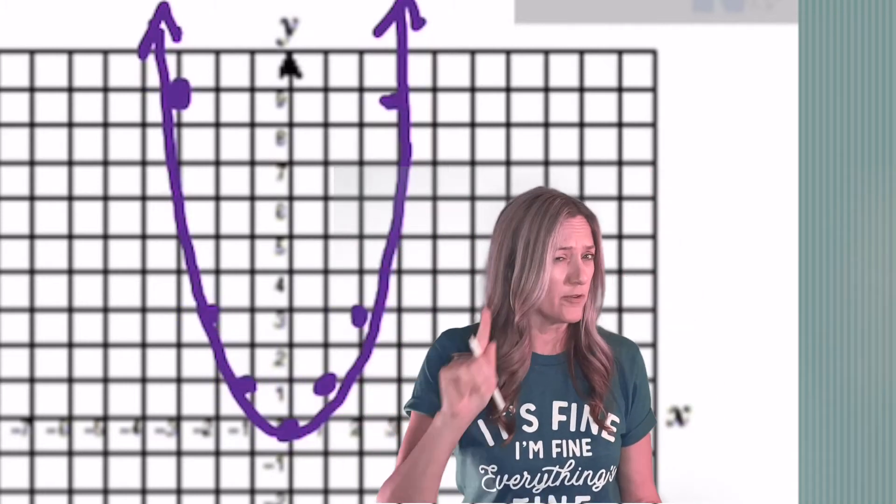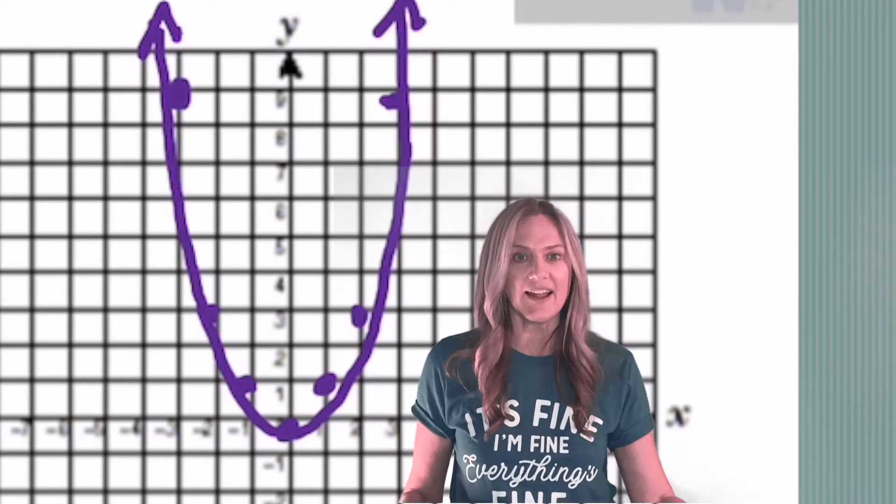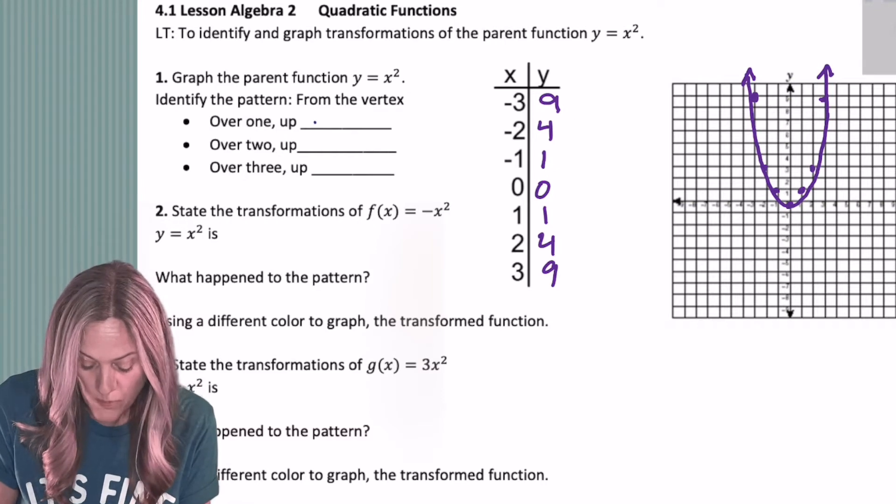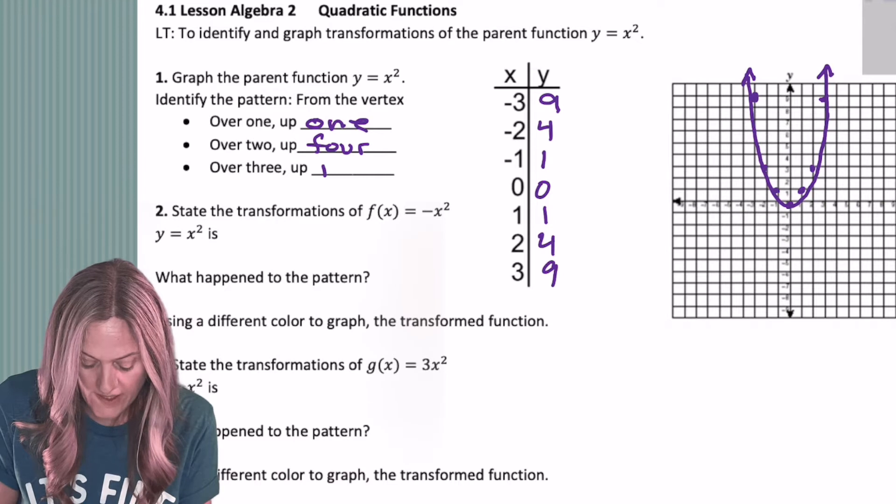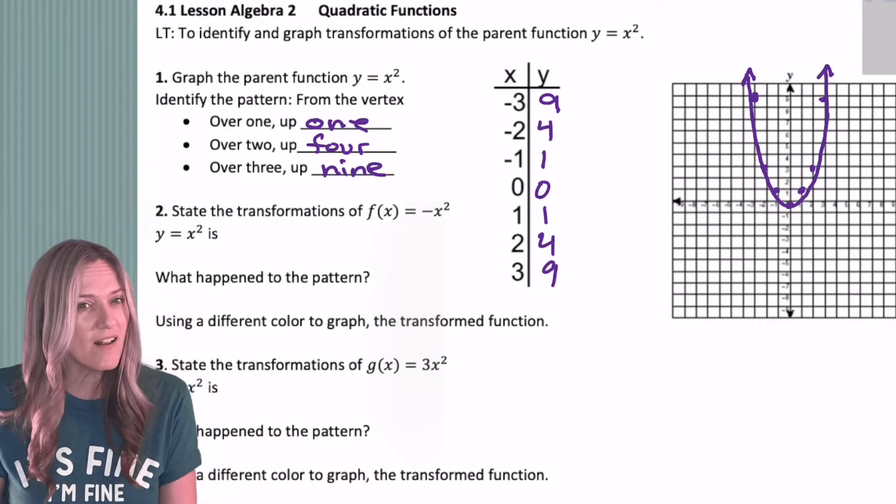What would happen if we went over 4? Yep, 16. You got it. So let's go ahead and write down the pattern points. Over 1, up 1. Over 2, up 4. Over 3, up 9. And now we can work with those pattern points for all of our transformations.